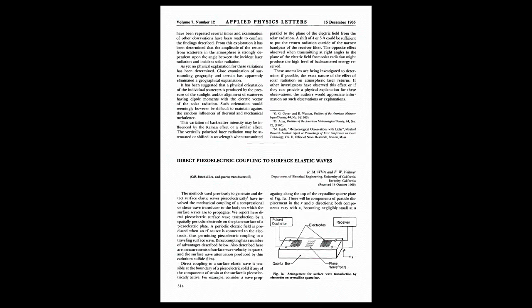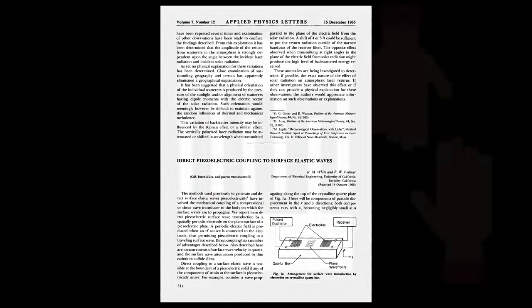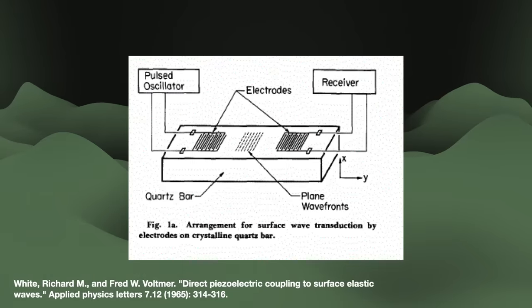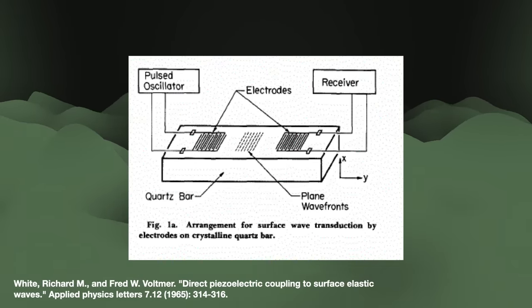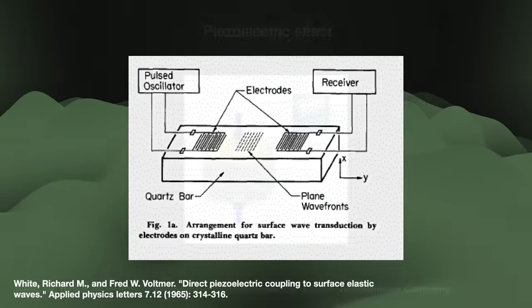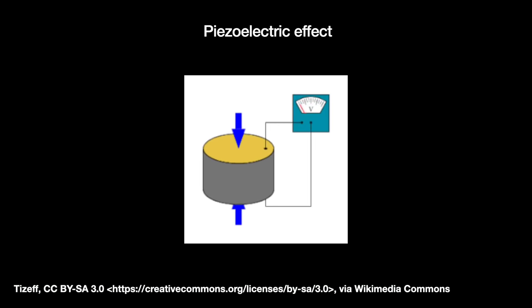Then in 1965, a UC Berkeley professor, Richard White, and his graduate student F.W. Voltmer demonstrated an interesting effect with these surface waves using special comb-shaped metallic electrodes called interdigitated transducers, or IDTs. The phrase interdigitated refers to the electrodes' arrangement, which resembles two interlocked hands. They put two similar if not structurally identical IDTs on top of a bar of crystalline quartz. The quartz bar acts as a piezoelectric substrate — piezoelectric referring to the conversion of electrical and mechanical energy — which has a critical role to play.